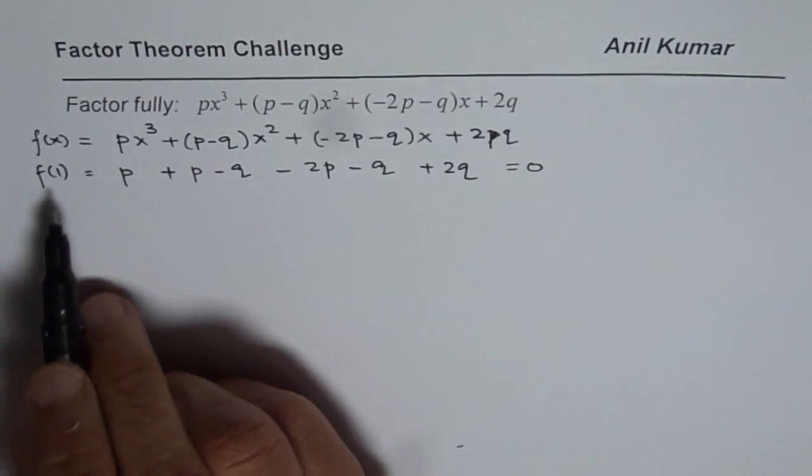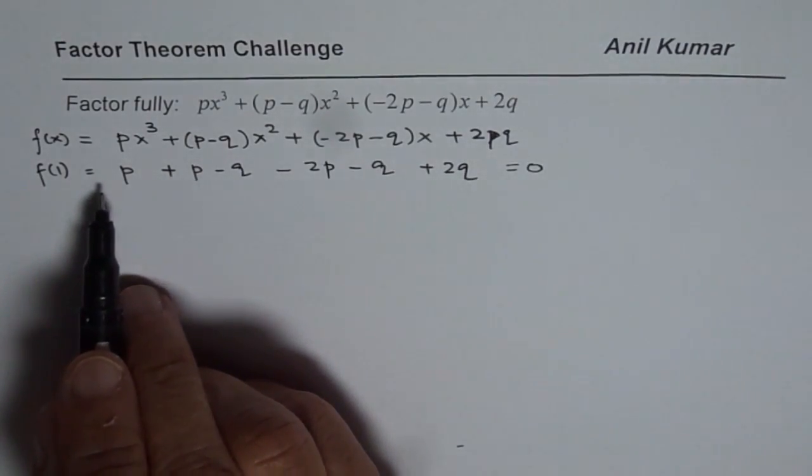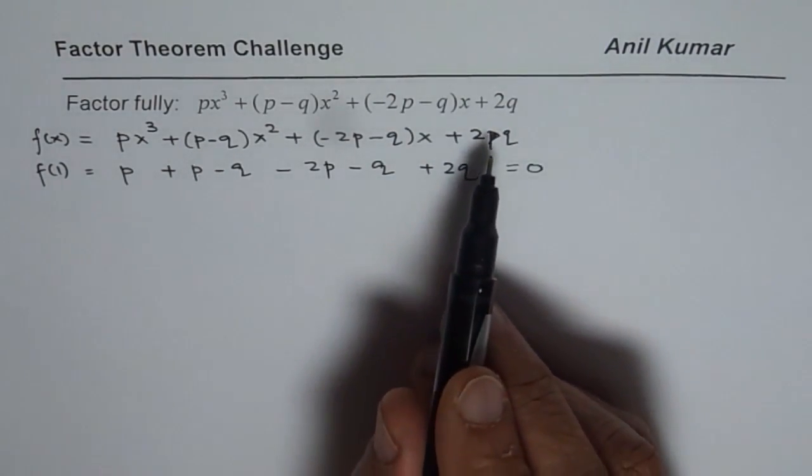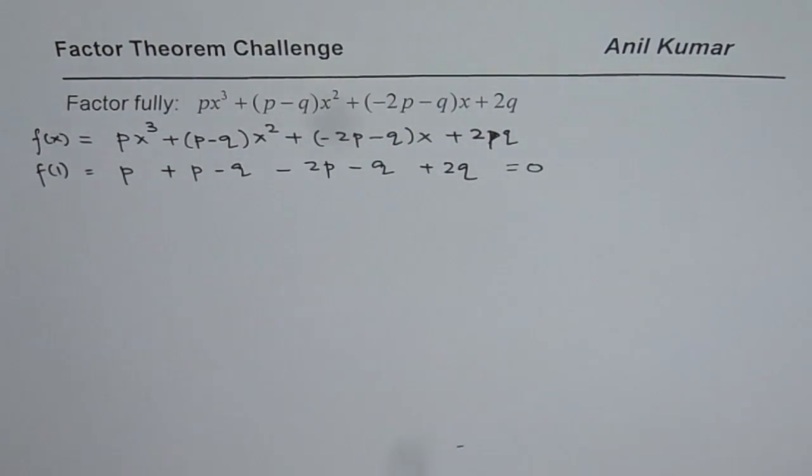So we know x-1 is a factor. So x-1 is a factor of this. Let us divide this expression by x-1, and then find the other factors.